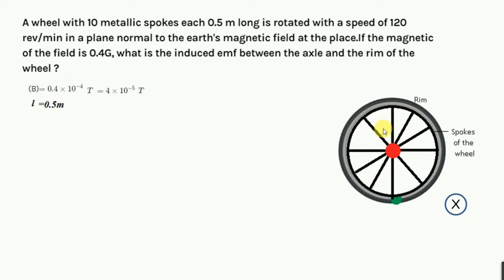So first I will consider one spoke. The magnetic field is given and length is also given, and now we'll find the frequency. 120 revolution per minute - if you convert this into revolution per second, then you'll get 120 by 60 seconds. If you cancel this, you will get 2 Hertz frequency.